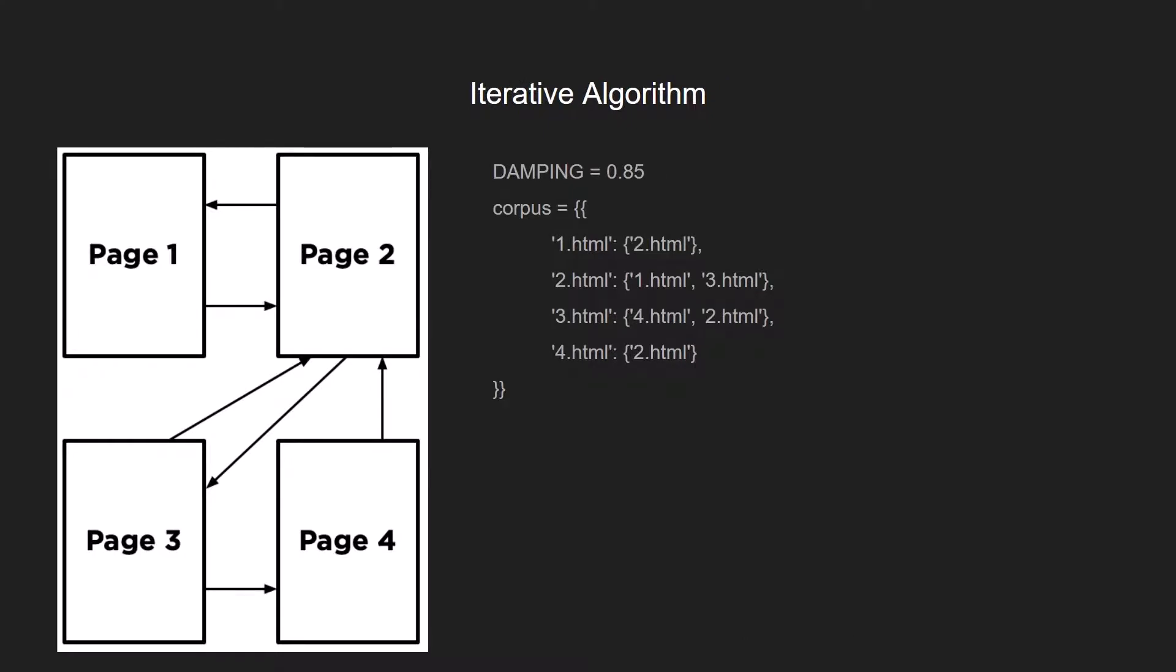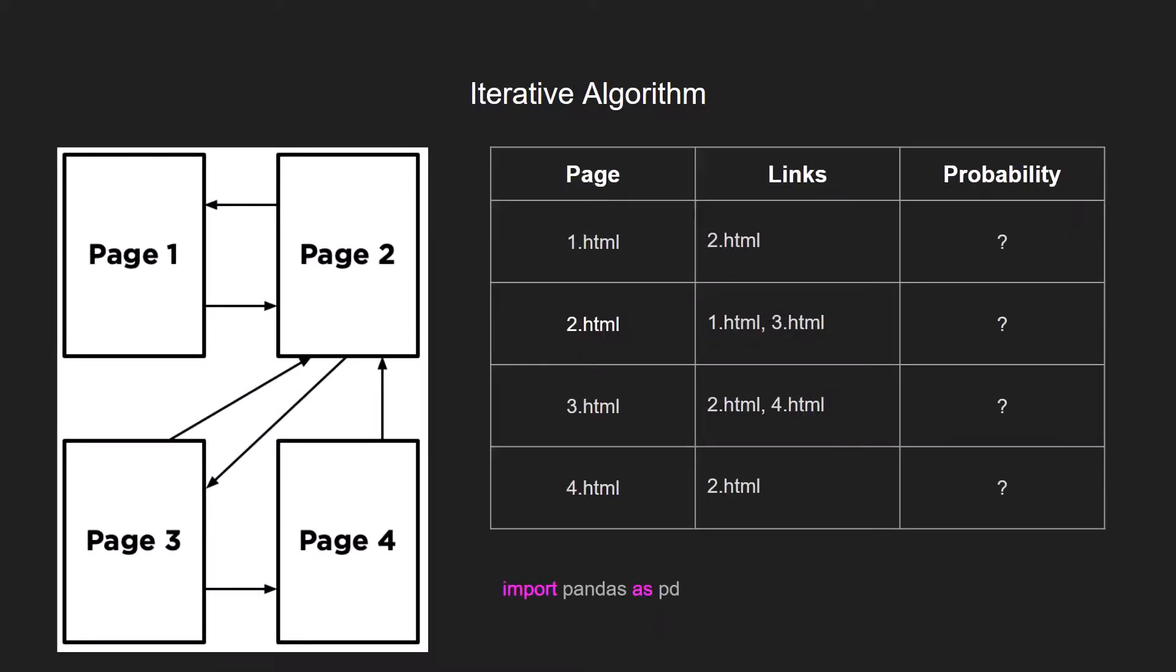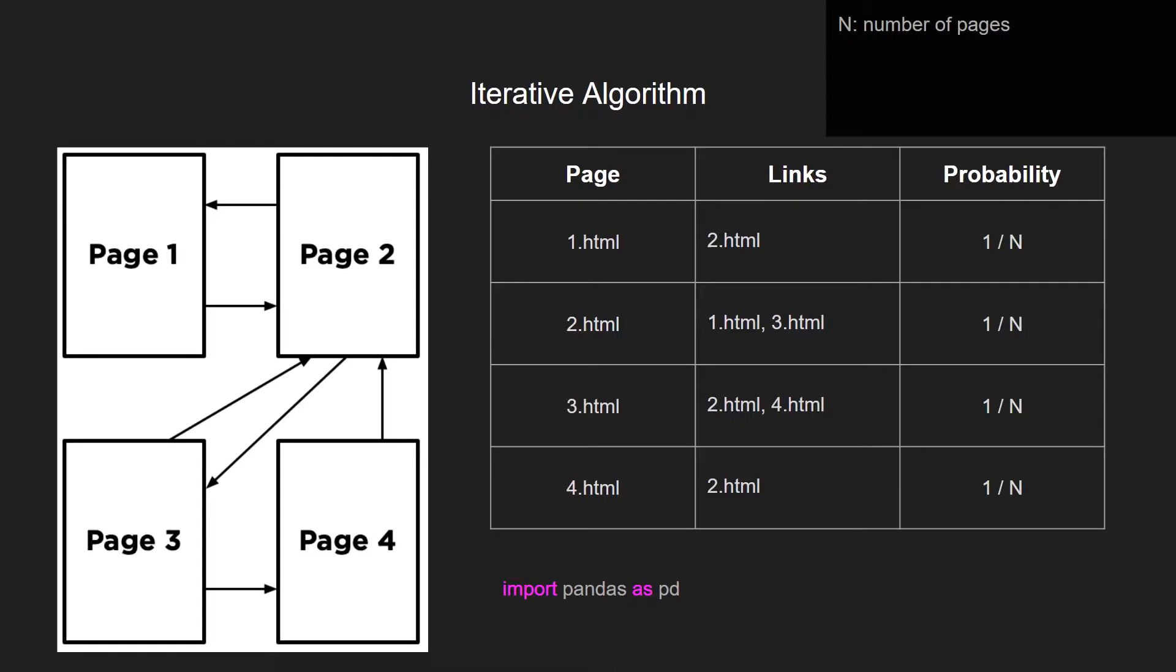So let's go to the iterative algorithm, also including a damping factor and the corpus. So we have again the pandas data frame with the probabilities which is unknown at the beginning. So we set the same probability for all the pages. And we then calculate the probability for each of them depending on the probability of the pages that link to it.